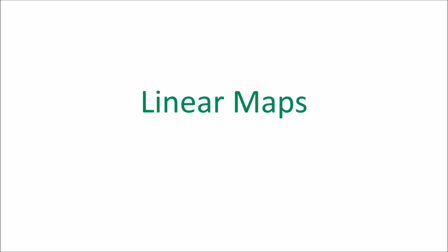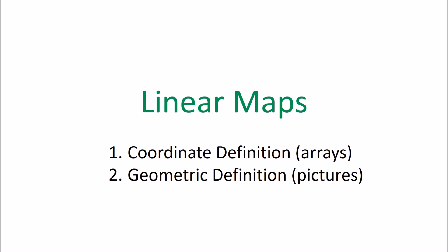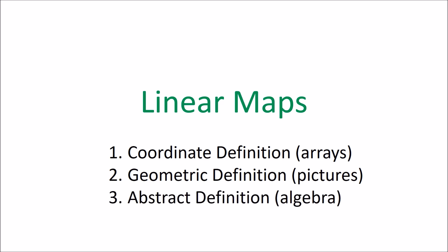We've finished our discussion of co-vectors. In this video we're going to talk about our third example of a tensor: linear maps. Linear maps are transformations that take a vector as an input and produce a new vector as an output. To introduce linear maps, I'm going to start with a coordinate definition, then a geometrical definition, and finally an abstract definition — which is purely algebraic and in some sense the best or truest definition. I'll also show how all three are related to each other.